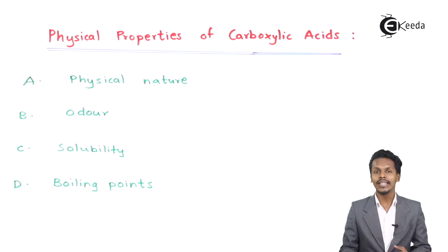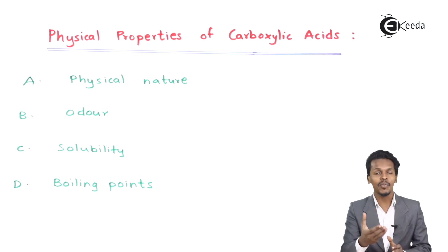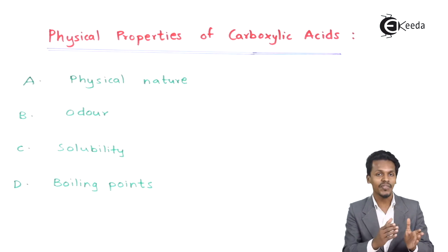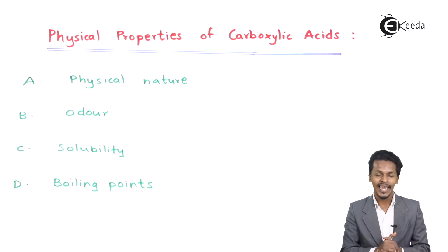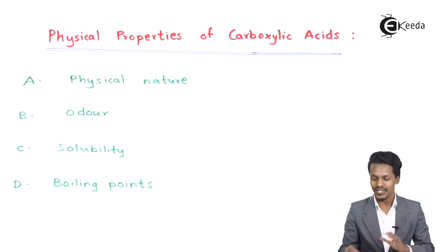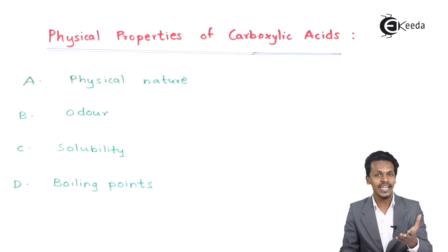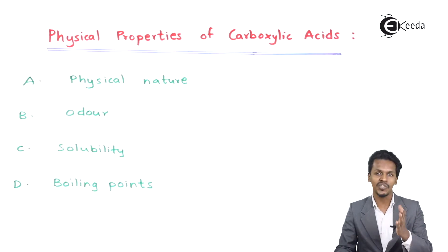For carboxylic acids which are aliphatic in nature, the aliphatic carboxylic acids with a carbon range starting from carbon number 1 to carbon number 9 are basically colorless liquids. And the carboxylic acids which have more than 9 carbons are basically waxy solids. This is the physical appearance covered under physical nature.